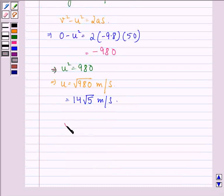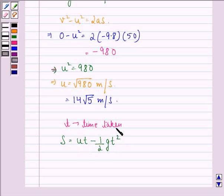Now let t be the time taken to reach the highest point. Then s = ut - ½gt² implies that 50 is equal to √980 × t - 9.8/2 × t².